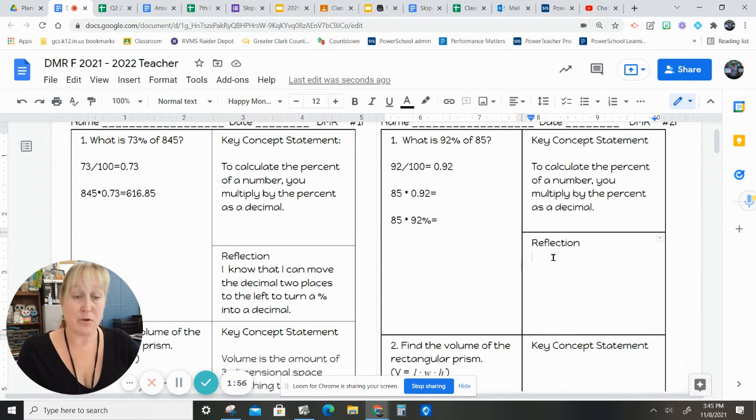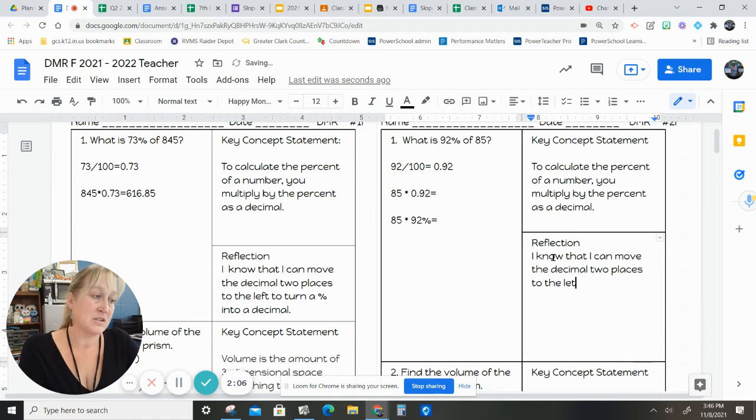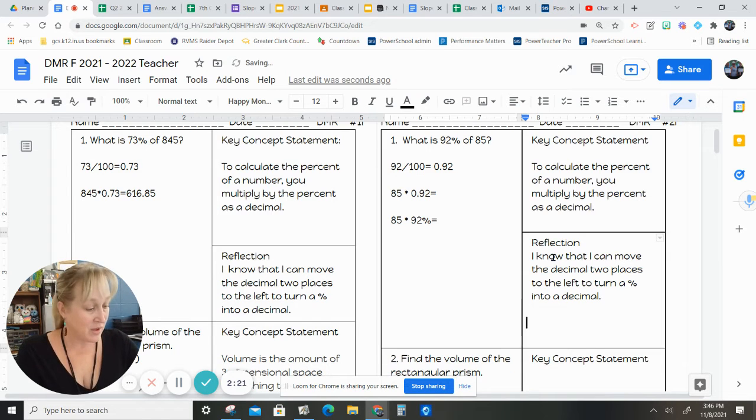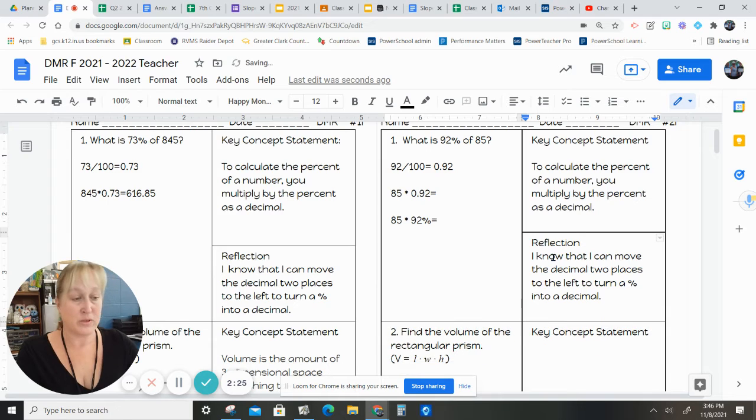So, that's why I'm going to make my reflection the same thing. I know that I can move the decimal two places to the left to turn a percent into a decimal. The issue will be if it's 1% or 5% or it doesn't have two places to move. But we will have a couple of examples like that that we can talk about when we get to that point.